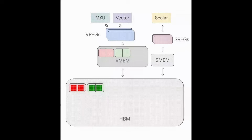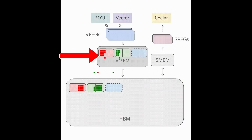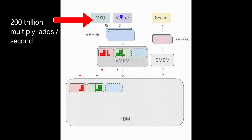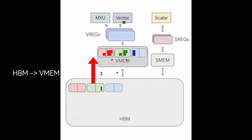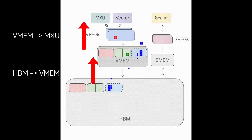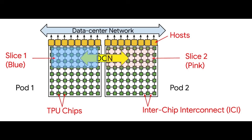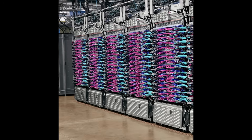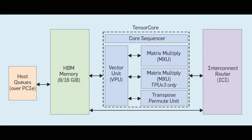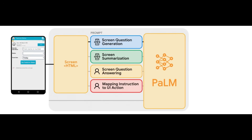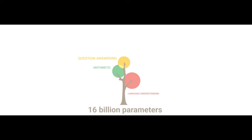Here's the key takeaway: TPUs are actually pretty simple. They load weights from high bandwidth memory into vector memory, then from vector memory into a systolic array which can perform around 200 trillion multiply-adds per second. The HBM-to-vector-memory and vector-memory-to-systolic-array bandwidths set fundamental limits on what computations TPUs can do efficiently. Training a giant model like PaLM or Gemini requires splitting both model weights and training data across thousands of chips. This architecture allows TPUs to achieve order-of-magnitude improvements in performance per watt and per dollar for ML compared to GPUs — which is why nearly all Google-scale models like Gemini, PaLM, AlphaFold, and TensorFlow workloads are trained on TPUs.